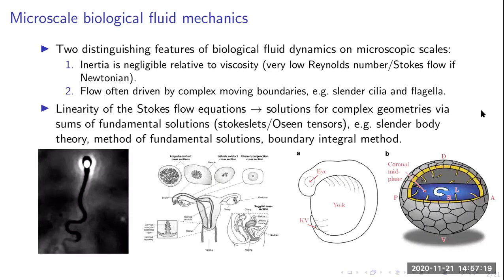The linearity of the Stokes flow equations means that we have the opportunity to address that second issue by constructing solutions for complex geometries through sums of fundamental solutions — discrete sums or integral sums. Those fundamental solutions are known as stokeslets or Oseen tensors depending on your community, and these methods underpin techniques such as slender body theory, method of fundamental solutions, and the boundary integral method. These methods have been around since the 1950s and have been enabling accurate simulations of problems such as swimming sperm since at least the mid-1980s.